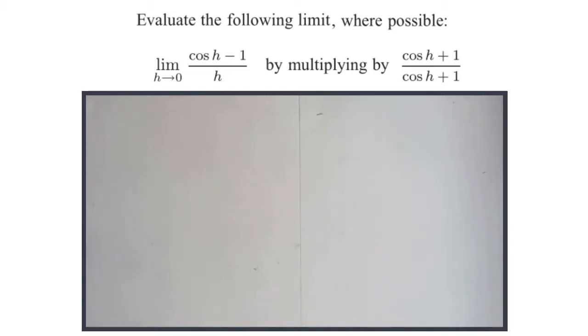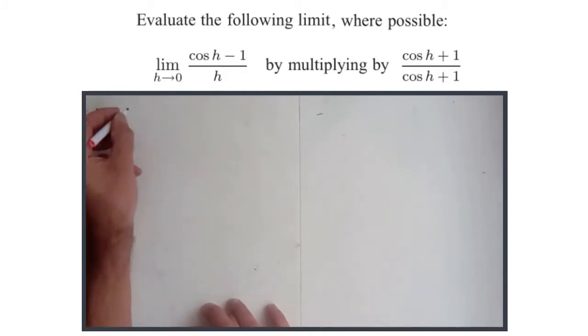Evaluate the following limit where possible. So hopefully it's possible to evaluate. The limit as h approaches 0 of cos h minus 1 over h.